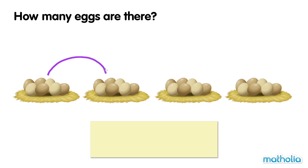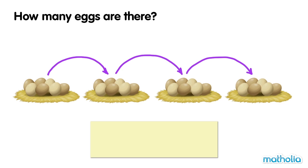fourteen, twenty-one, twenty-eight. There are twenty-eight eggs altogether.